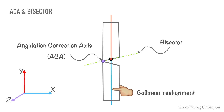CORA can also be defined as any point that will lead to collinear realignment of the bone axis when the ACA passes through it. Therefore, all the points on the bisector can be considered CORAs.